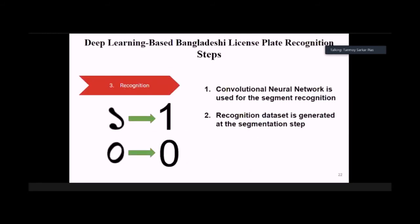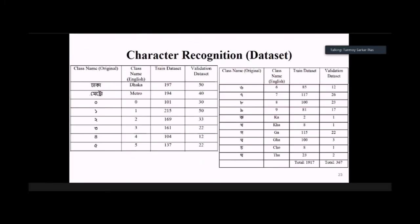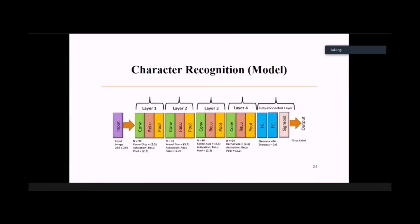This is the result of segmentation. After segmentation, we pass all the segmented images to the convolutional neural network, and we generate the dataset from the segmentation stage. This is the overview of our recognition dataset. All the classes are here, and we use a good amount of images to get better results.